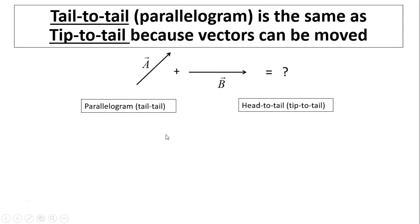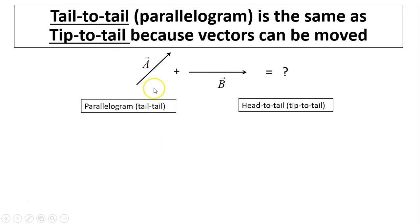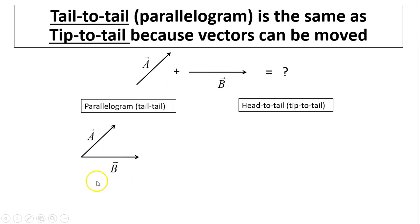The tail-to-tail or parallelogram method is the same as the tip-to-tail or head-to-tail method, because vectors can be moved. For example, a plus b — there are two ways to do it. First, let's do the parallelogram method, tail-to-tail.